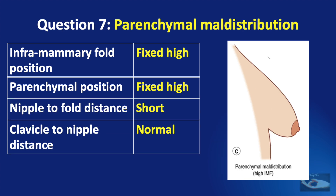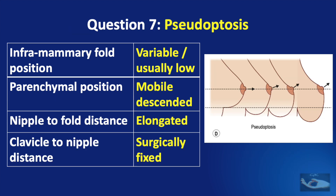When there is parenchymal maldistribution, the inframammary fold position is fixed high, parenchymal position is also fixed high, nipple to fold distance is short, and clavicle to nipple distance is normal. In pseudoptosis, the inframammary fold position is variable and sometimes low, parenchymal position is mobile and descended, nipple to fold distance is elongated, and clavicle to nipple distance is surgically fixed as this condition typically occurs after surgical procedures.